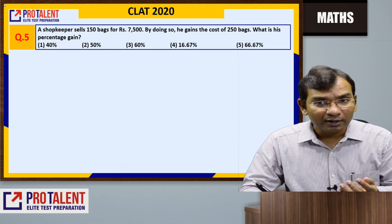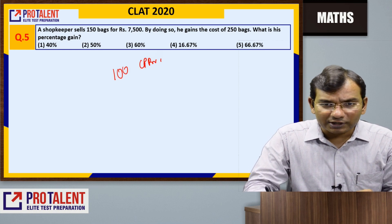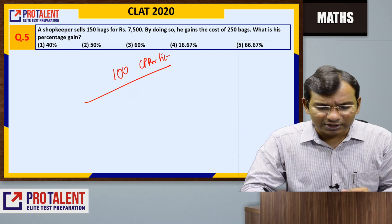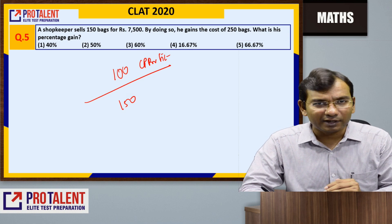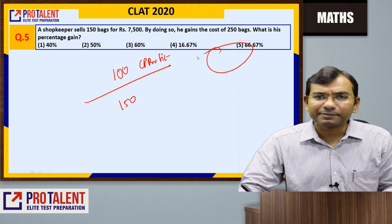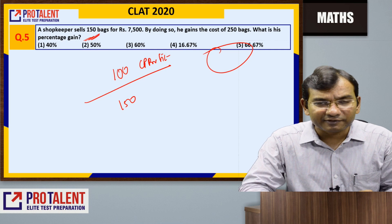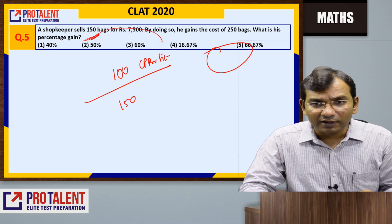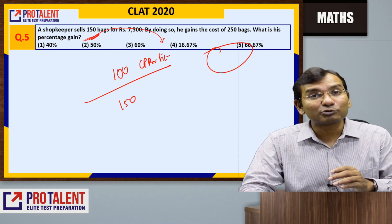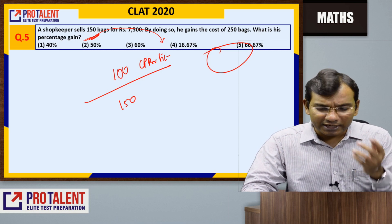Question 5: A trader had 150 bags and sold enough to cover the cost of 250 bags. His profit is 100 bags worth over a cost of 150 bags. So profit percentage = 100 divided by 150 = 2/3 = 66.67%. That is the total profit percentage.